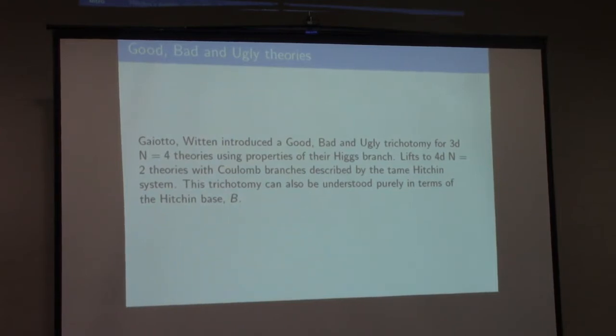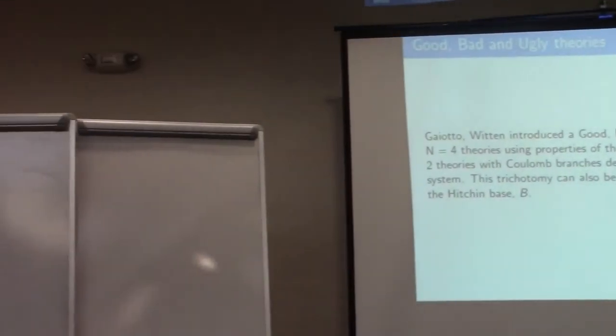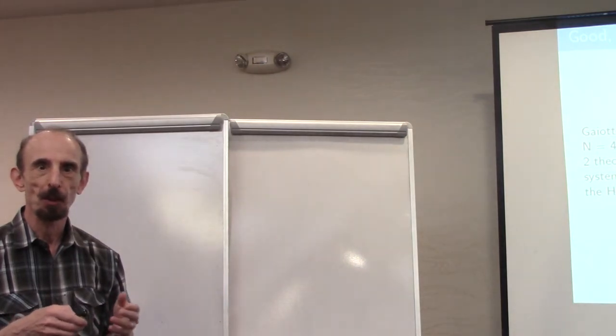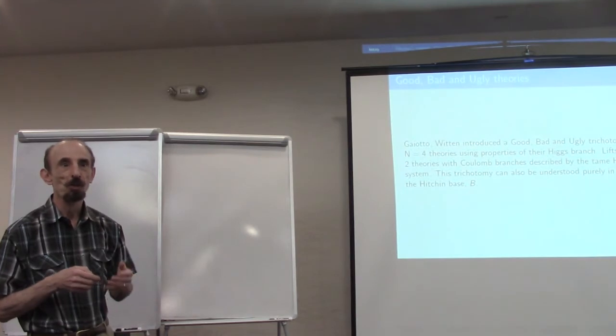One concept that keeps appearing in this story is a trichotomy due to Gaiotto and Witten, and in a slightly more relevant setup by Gaiotto and Razamat. They take theories and call some of them bad, some of them ugly, and the remaining ones good. They describe it in terms of the Higgs branch of the theories, classifying the theories into good, bad, and ugly depending on properties of the Higgs branch moduli.